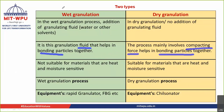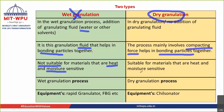Wet granulation is used when the materials are not sensitive to heat and water. But when the material is sensitive to heat and water, dry granulation is used. Because in wet granulation we are drying the granules at 50°C, heat-labile substances get decomposed, and we are also adding water or solvent. So when the material is heat-sensitive and moisture-sensitive, wet granulation cannot be used, whereas dry granulation can be used.